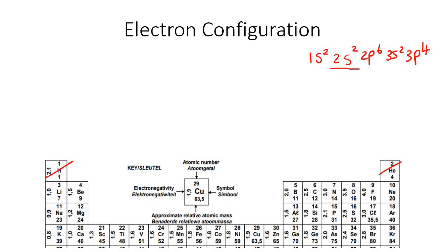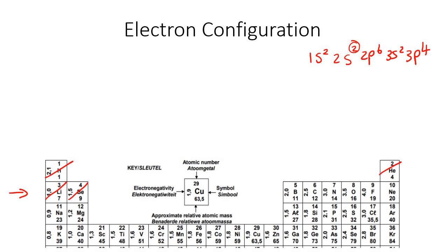Then we go to row 2, because that's what the 2 means — you're in row number 2. In the S block, which was all of these, they said that we are allowed to cross off two electrons. Then we are in row 2 but now we're in the P block, and they said you can cross off six electrons — 1, 2, 3, 4, 5, 6. Excellent.